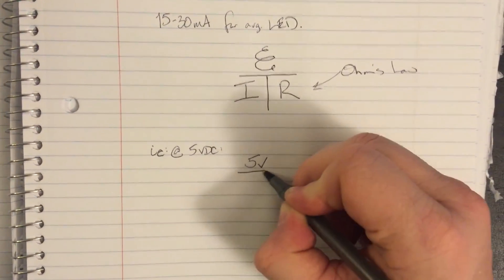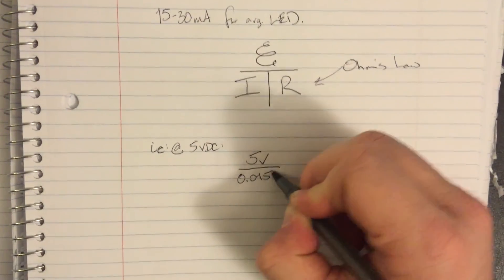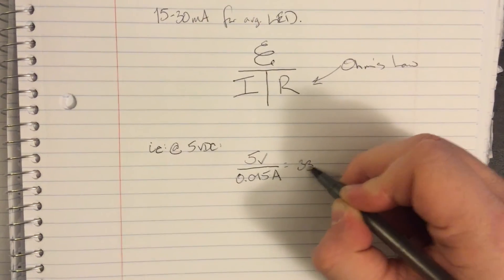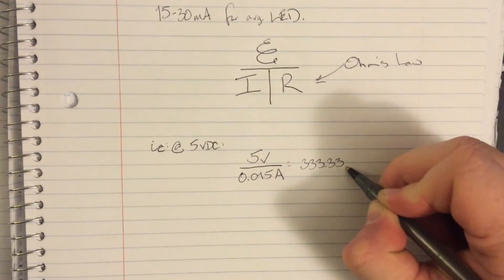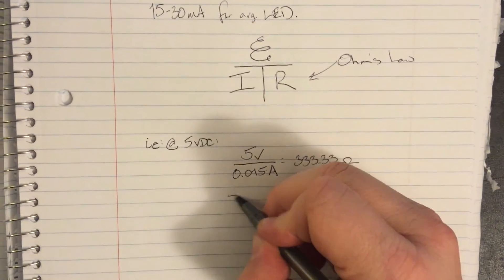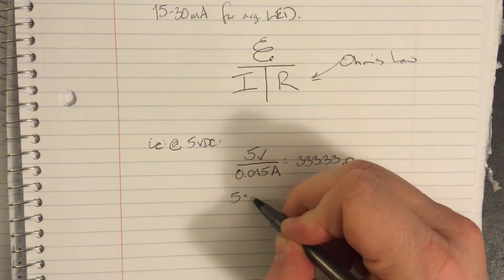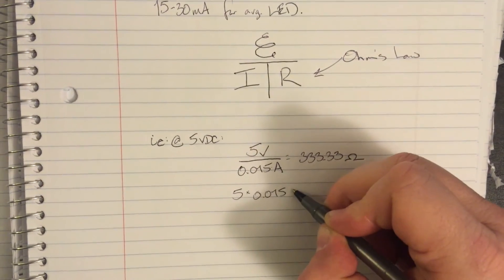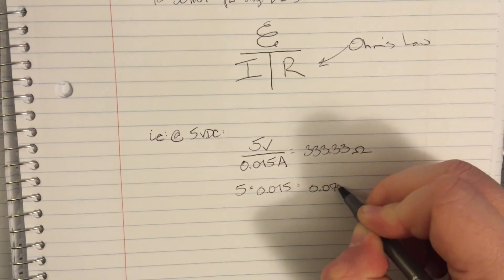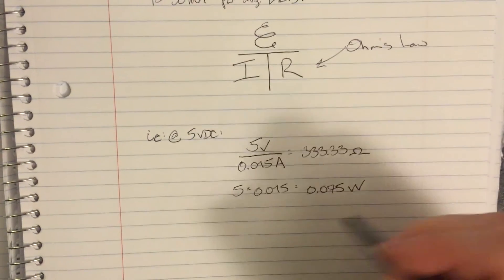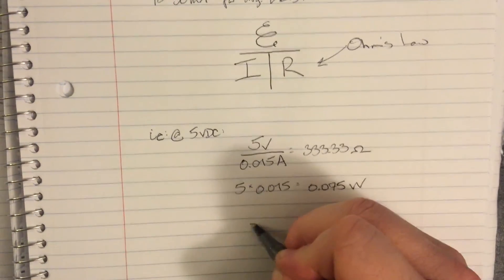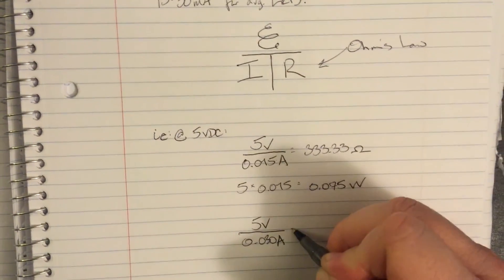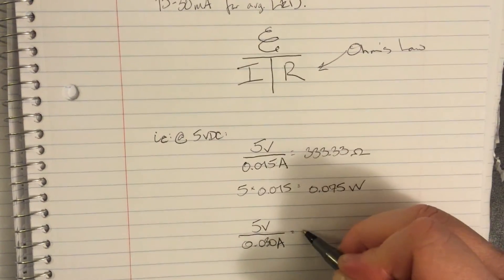For example, in a 5 volt system I would take the voltage over the current to get the resistance. So 5 volts over 15 milliamps would give me 333.33 ohms. Now 5 volts times .015 amps or 15 milliamps will give me the power consumption expected. And generally speaking, this isn't something you're going to need to concern yourself with in terms of LEDs. A half watt resistor, even a quarter watt resistor, is probably going to be plenty.